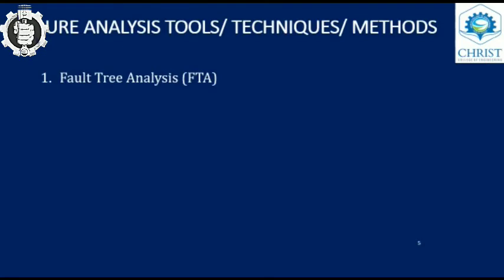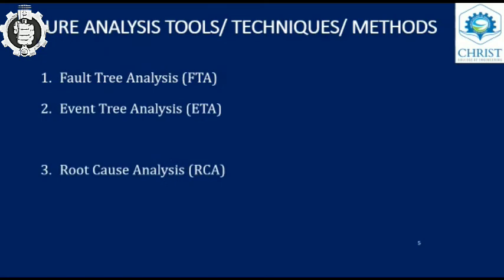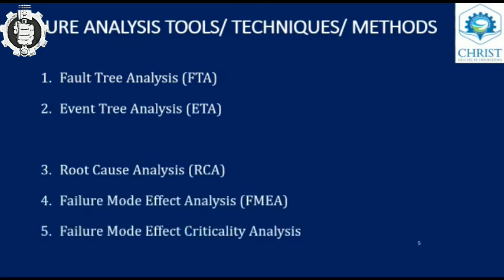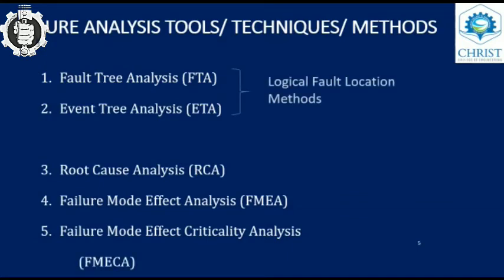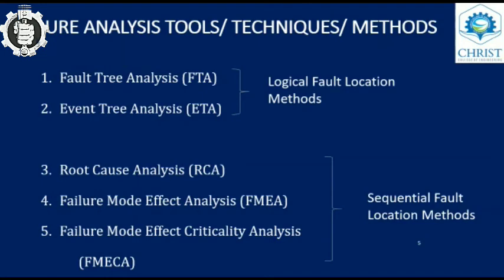Failure analysis tools are mainly five types: fault tree analysis, event tree analysis, root cause analysis, failure mode effect analysis, and failure mode effect criticality analysis. The first two — fault tree analysis and event tree analysis — fall under logical fault location methods. The last three — root cause analysis, failure mode effect analysis, and failure mode effect criticality analysis — fall under sequential fault location methods.